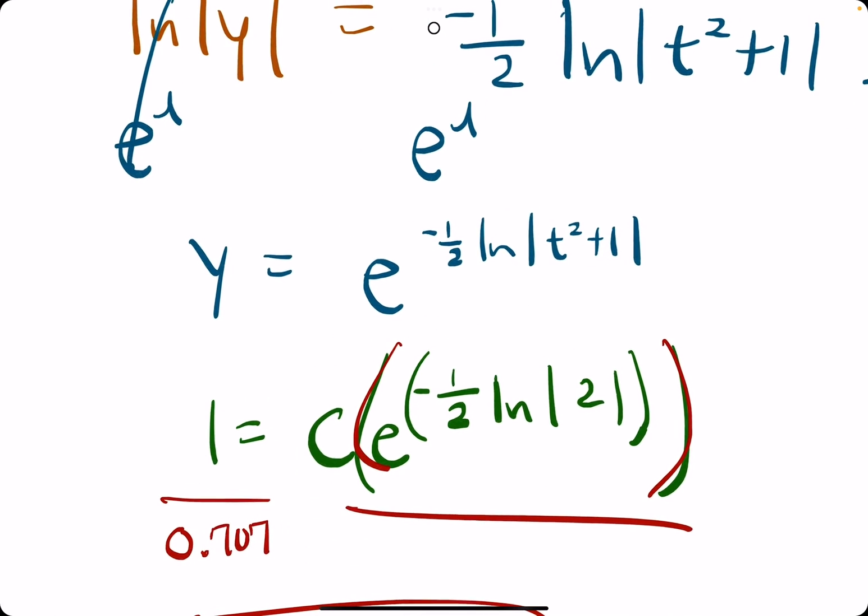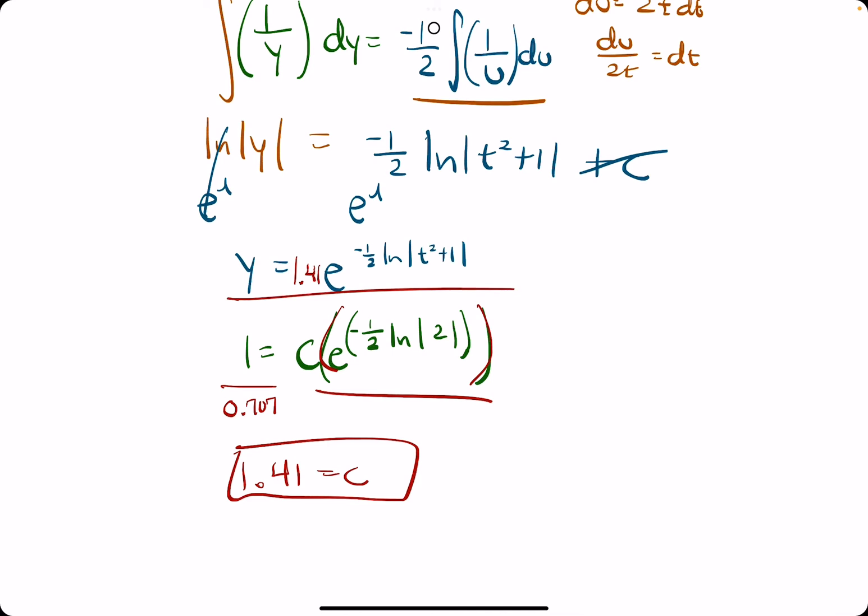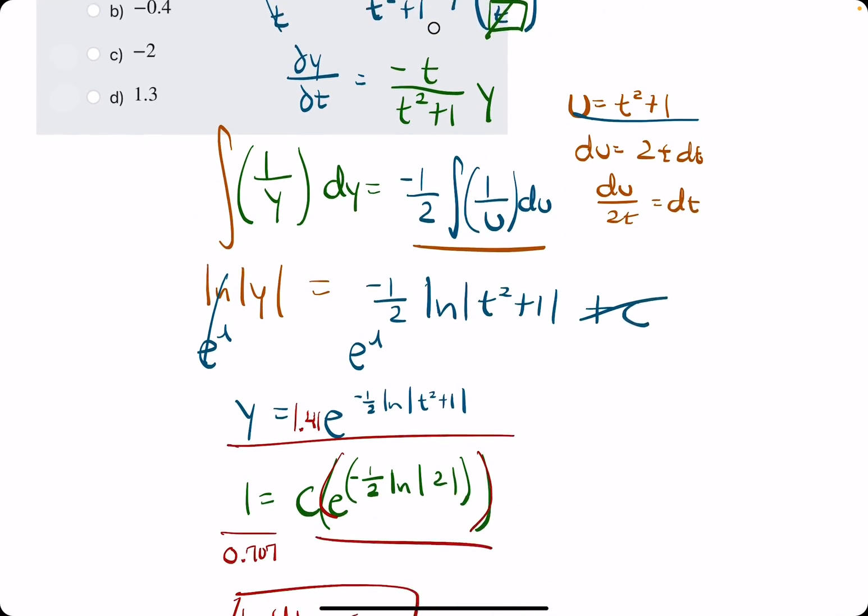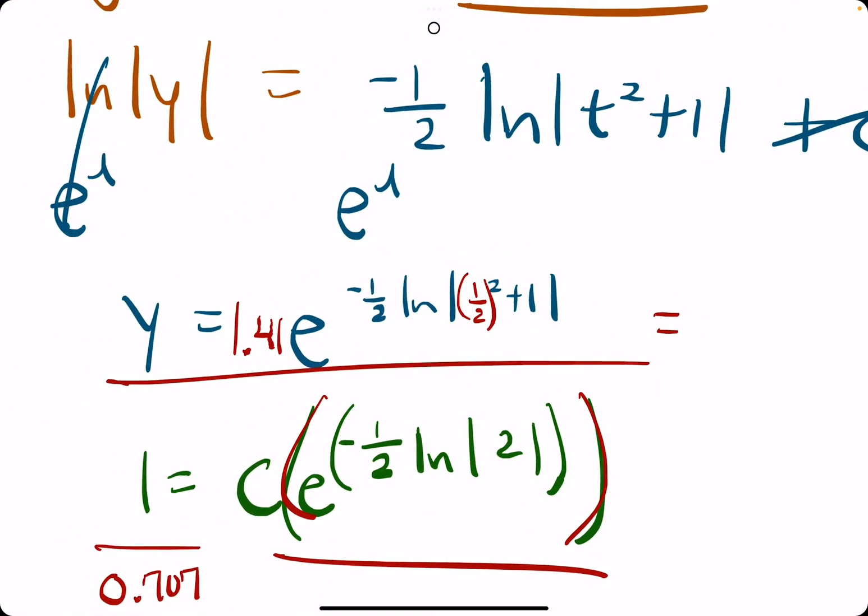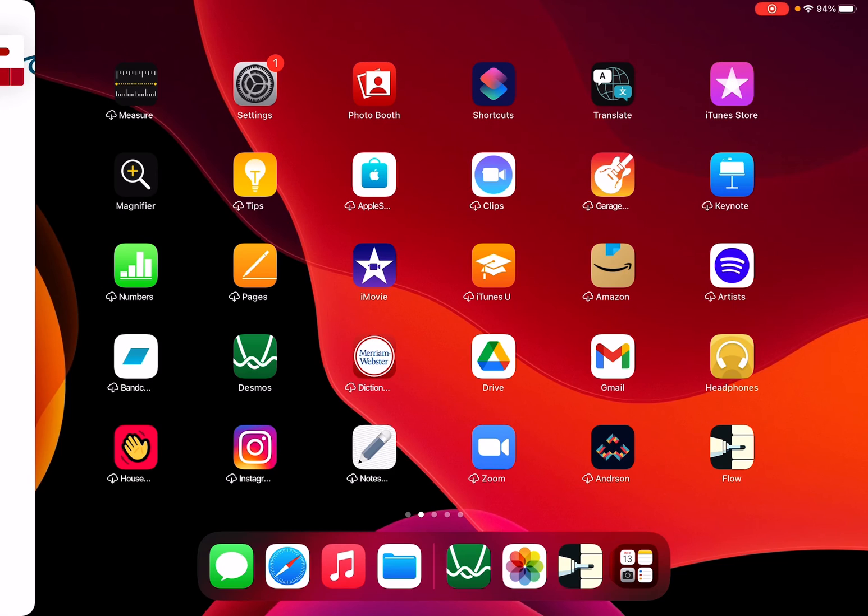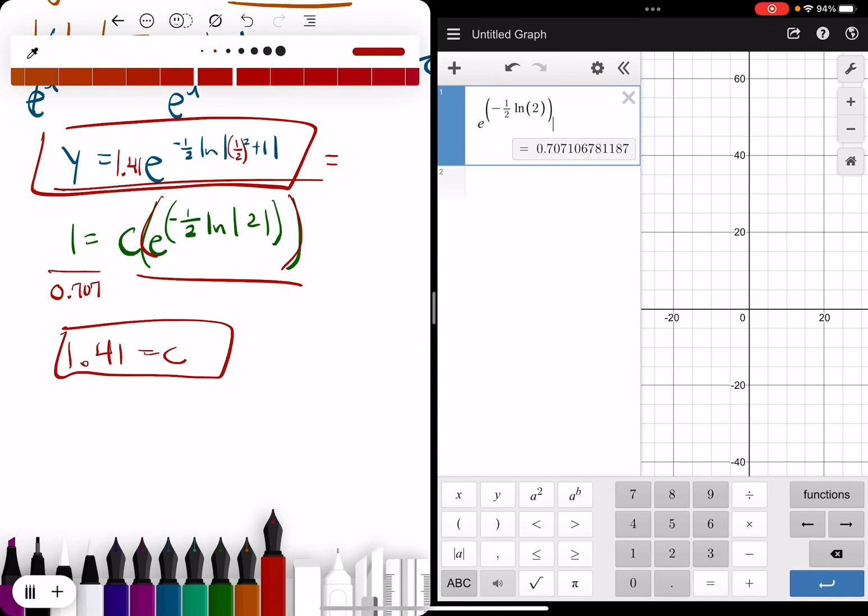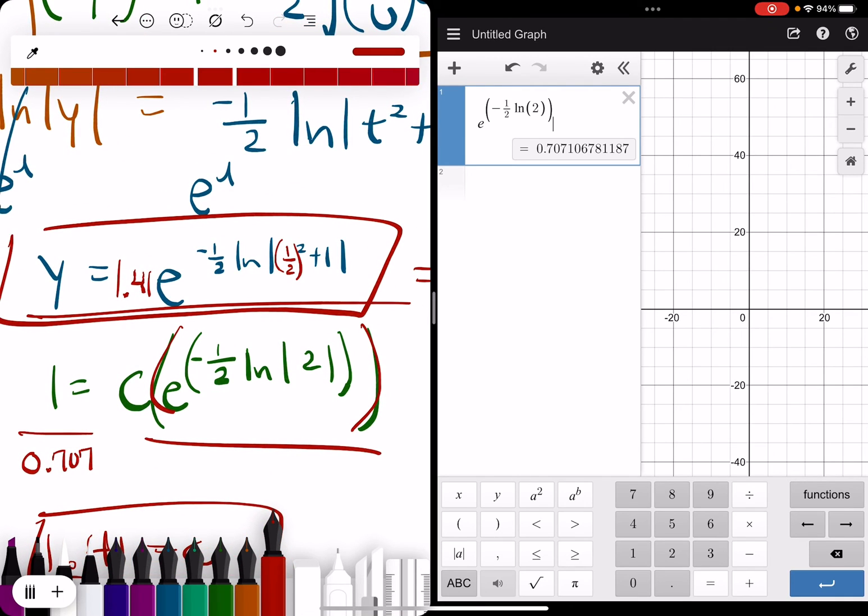All right. So we have 1.41 for our c value. Now we want to plug that back in to our general solution here. 1.41. Now we want to plug in 1 half for t and calculate the y value. So plugging in 1 half for t will look like this. So let's go ahead and calculate this. All right. So we have kind of a good setup to start with here. So e to the negative 1 half ln of, and we'll go ahead and replace the inside with 1 over 2, 1 half squared plus 1. And I think that's it. Just scanning through it. We just want to tack on a 1.41 out in front. And we get 1.26 as a result.